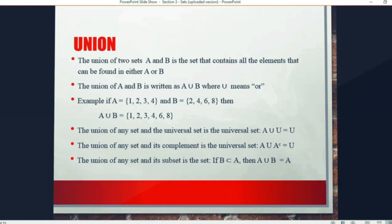So for example, if A is {1, 2, 3, 4} and B is {2, 4, 6, 8}, then A union B is all the elements that can be found in A, combined with all the elements that can be found in B, also known as A or B.